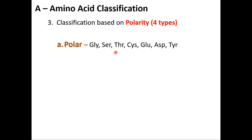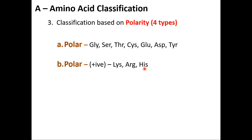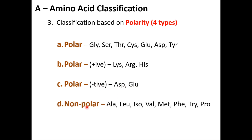Uncharged polar amino acids (polar but carry no charge) include: glycine, serine, threonine, cysteine, glutamine, asparagine, and tyrosine. Positively charged polar amino acids include: lysine, arginine, and histidine — these are basic in nature. Negatively charged polar amino acids include: aspartate and glutamate — these are acidic in nature.